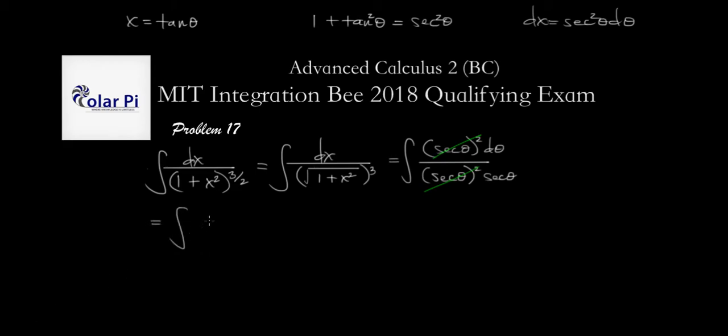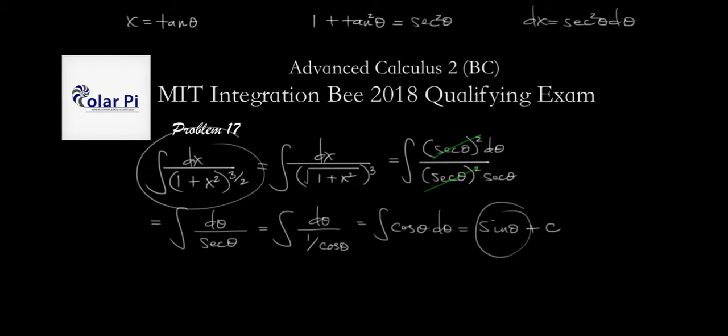So what we have is the following, which is integral of d theta divided by secant theta. Well, this is integral d theta divided by 1 over cosine theta. But wait, we can write this simpler. We can write that it's the same as just the integral of cosine theta d theta, but that's equal to sine theta plus c. So almost at the finish line, but we don't want sine theta, we want stuff that has to do with x. So we require this translation here.